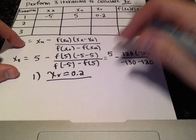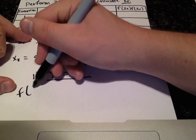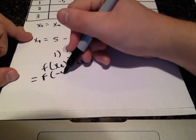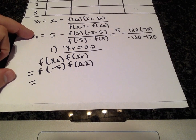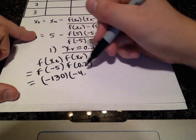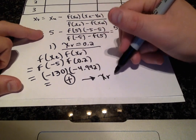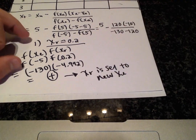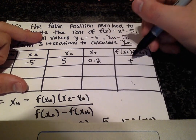Then we have to do the positive/negative test — the product of the function evaluated at the lower limit and the function evaluated at x-r. That equals negative 130 times negative 4.992, which gives us a positive value, telling us to search right. So x-r is set as the new x-lower value. We fill that in: x-r equals 0.2 and the product is positive.